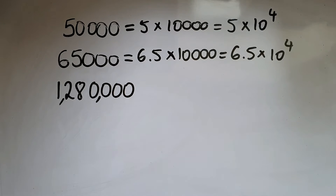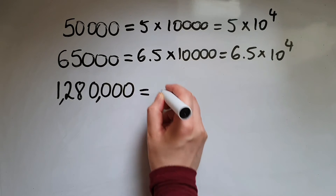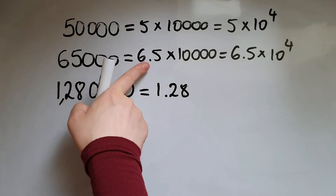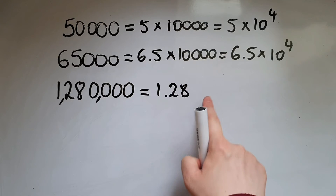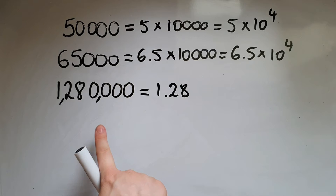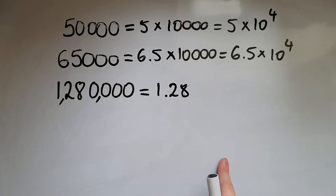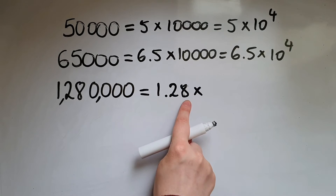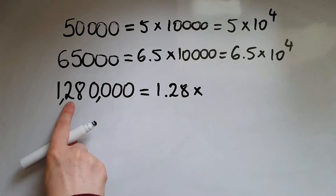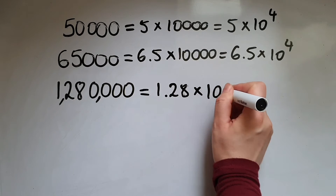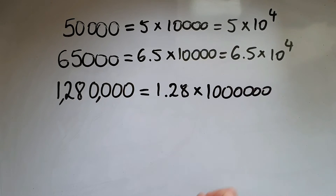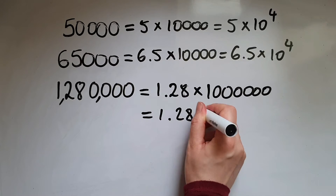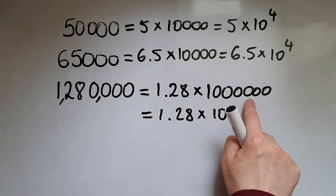Now we've got 1,280,000, which we're going to write as 1.28. That first number we're multiplying by a power of 10 is always between 1 and 9.9999 — so not 10. This is going to be multiplied by 1 with 6 zeros, so we can rewrite this as 1.28 times 10 to the power of 6.